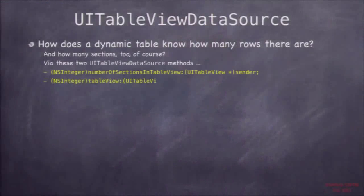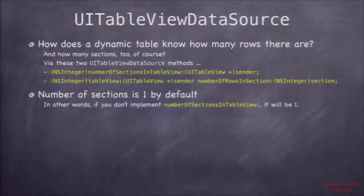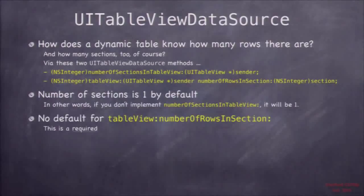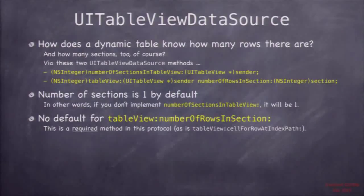The other two methods are how many sections and how many rows. If you don't implement numberOfSectionsInTableView, it has a default of one — so it's all one big section. The other one, how many rows are in each section, has no default, so it's required. You must say how many rows are in each section. If you only had one section you could just answer that, but you could have multiple sections — like in your homework where different countries have different numbers of cities, and you'll have to answer this correctly for every section.